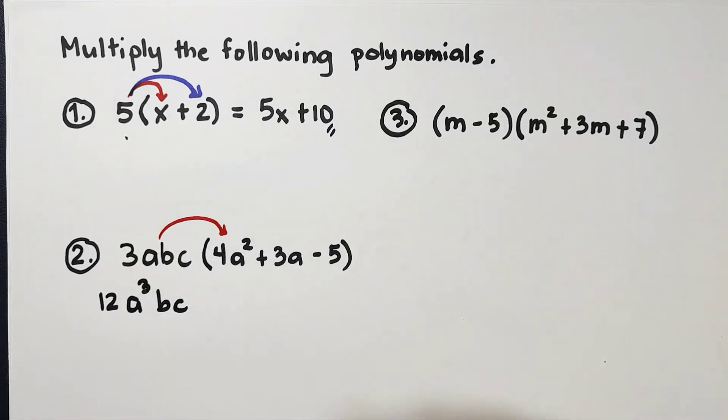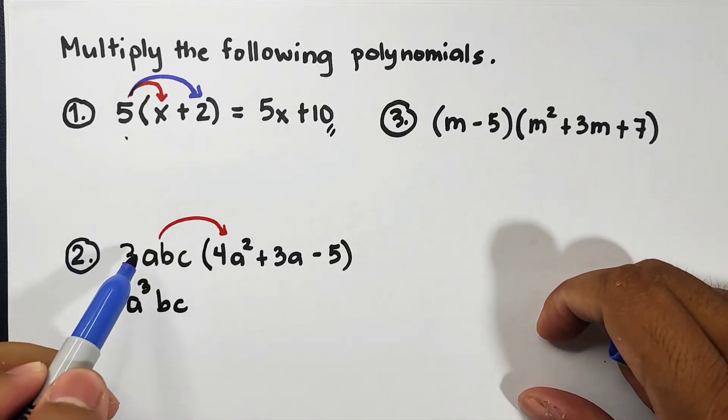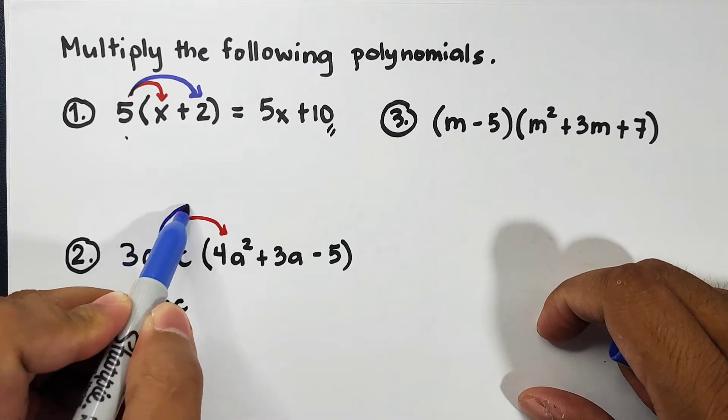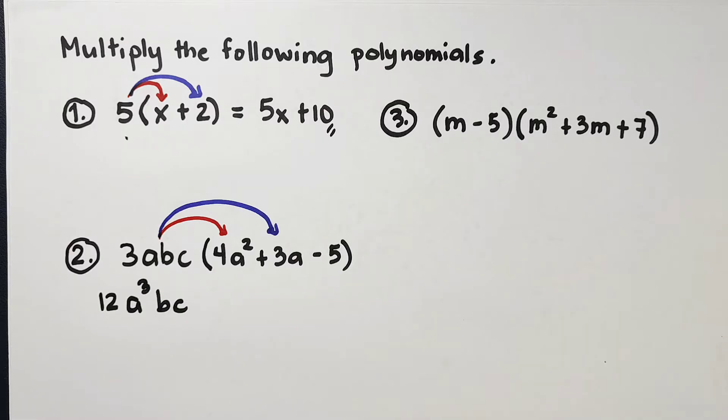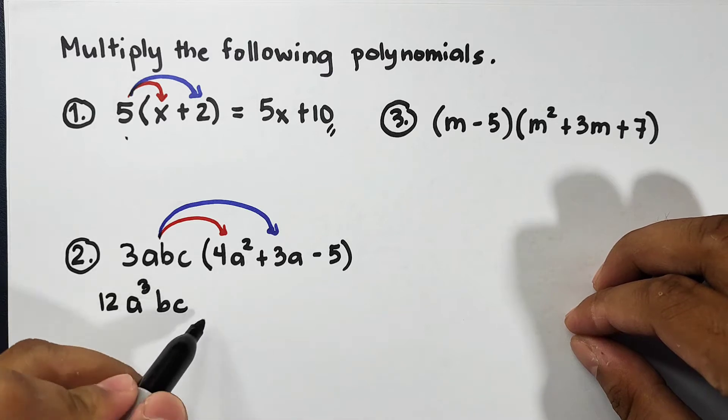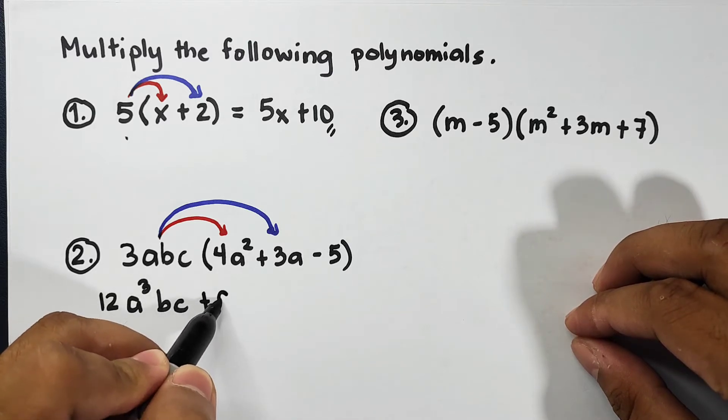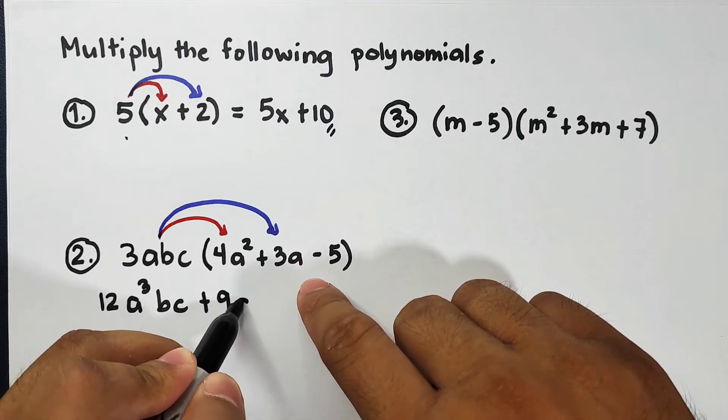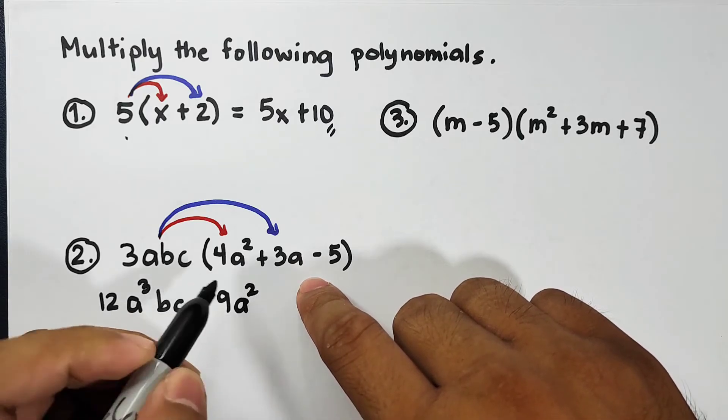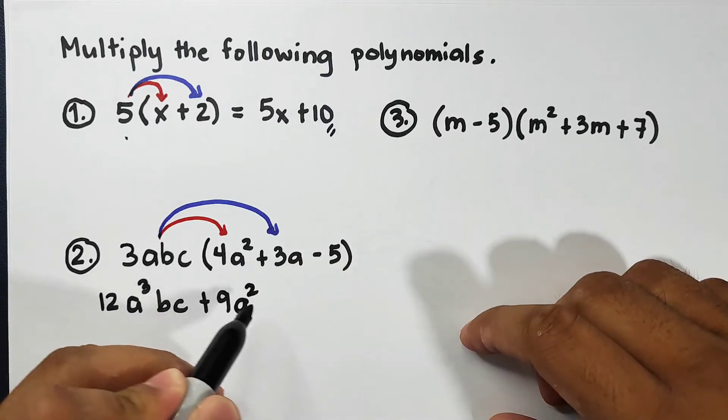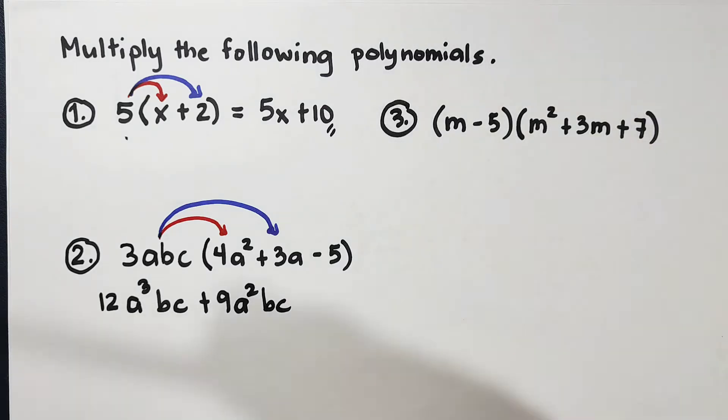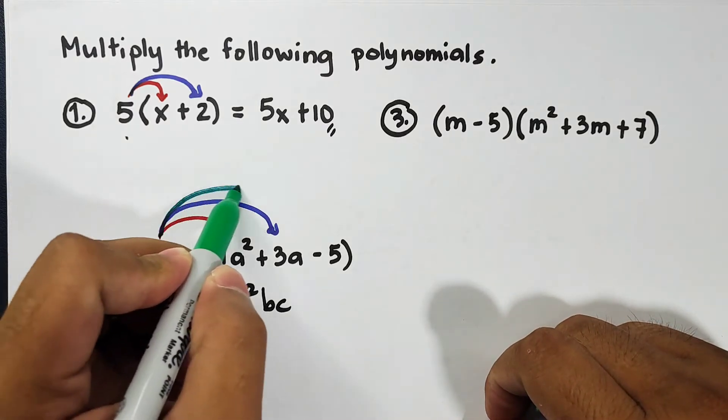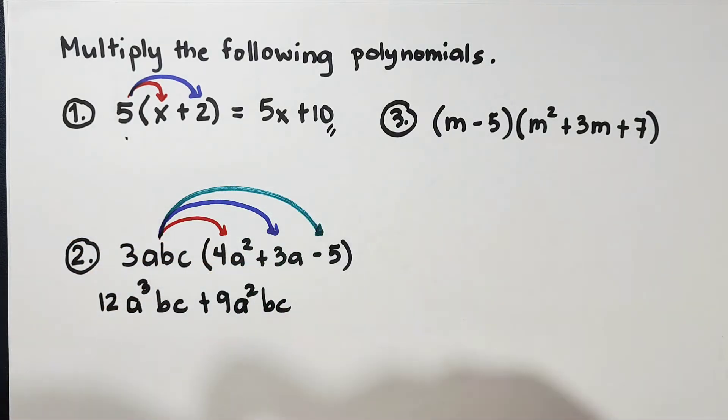Next, we will multiply 3abc to 3a. What will happen here is 3 times 3, that is positive 9, then a times a is simply a². Since they don't have b and c, we will have here b and c. Next, the third one: 3abc times negative 5.